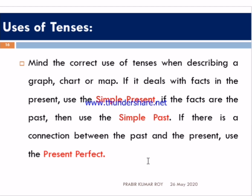Some students are worried about which tense to use when writing a graph, chart, or map. When describing a graph, chart, or map, if it deals with facts in the present, use the simple present. If the facts are in the past, then use the simple past. Sometimes there is a connection between the past and the present; in that situation, you should use the present perfect tense.